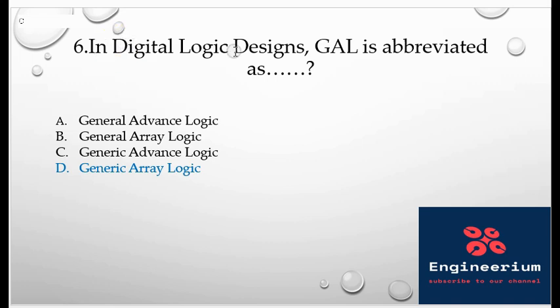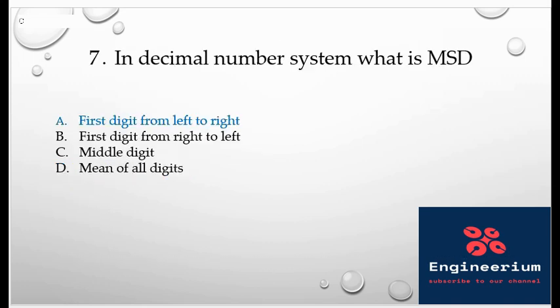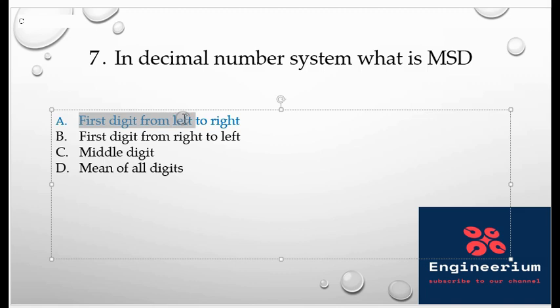In the digital logic design, here GAL is abbreviated as GA. So it's abbreviated as Generic Array Logic. It is basically a reprogrammable device used in the digital system. And moving next, in a decimal number system, what is MSD? MSD basically stands for the most significant digit and is the first digit from left to right. And A is the right answer and it is the highest digit out of all and it can also represent the signed or unsigned number.